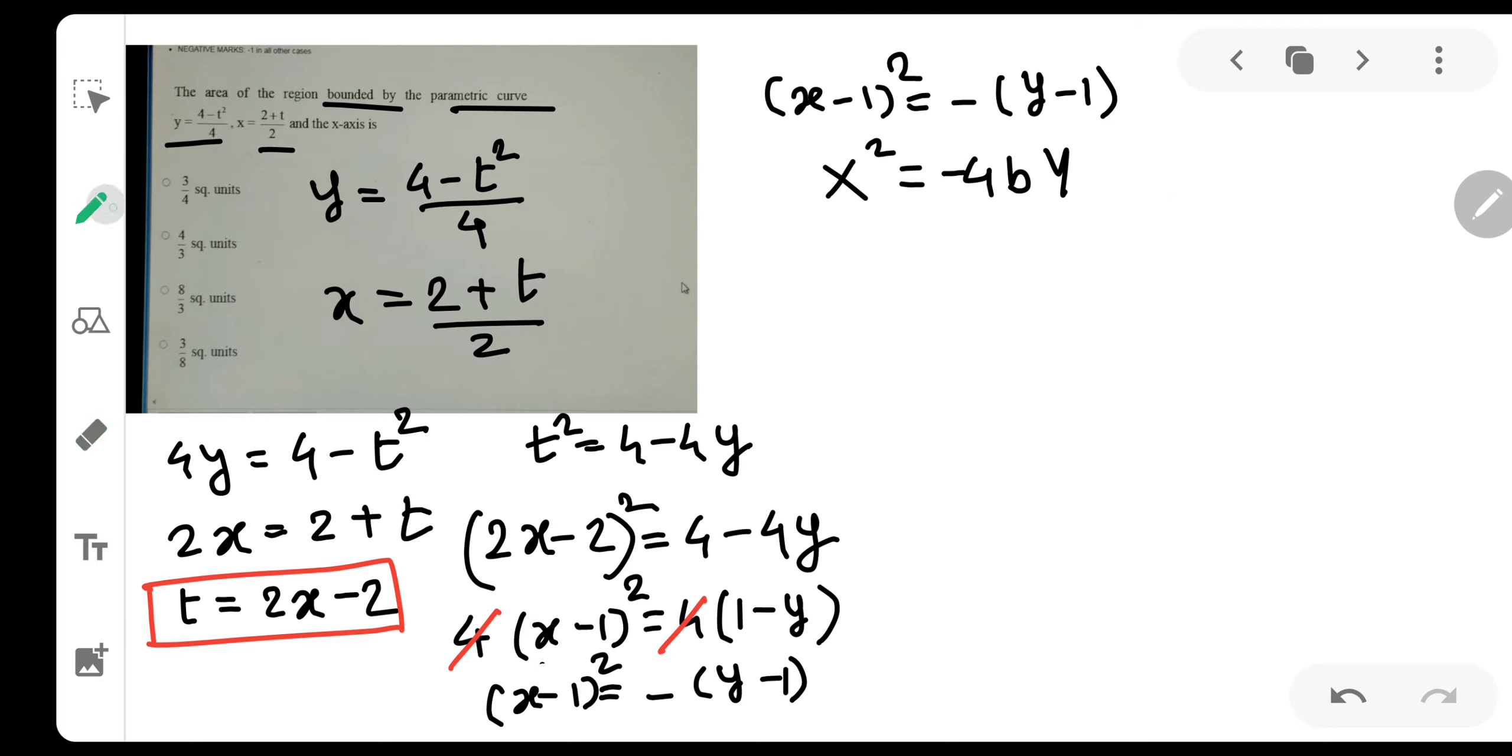Now we need to understand that there is a shift of origin. The vertex of this curve is nothing but 1, 1. Capital x is equal to x minus 1 and capital y is equal to y minus 1. That is how I got that. So basically this is a parabola which is opening downwards.